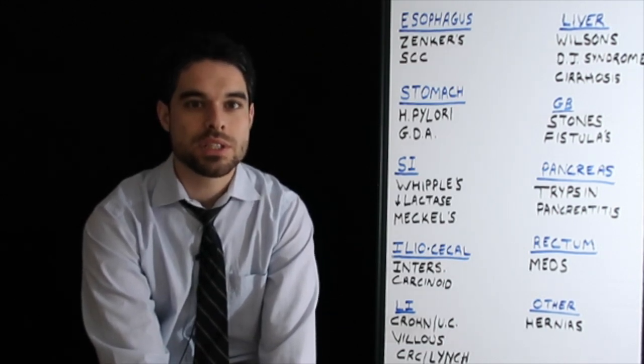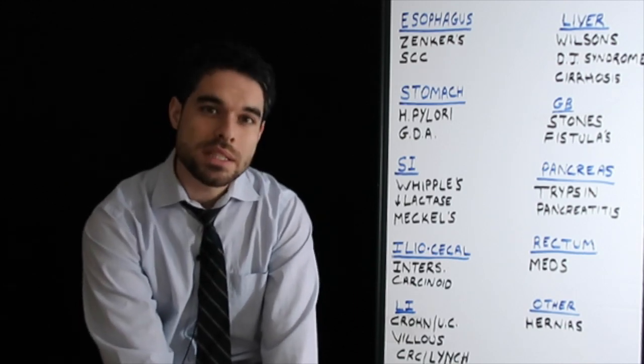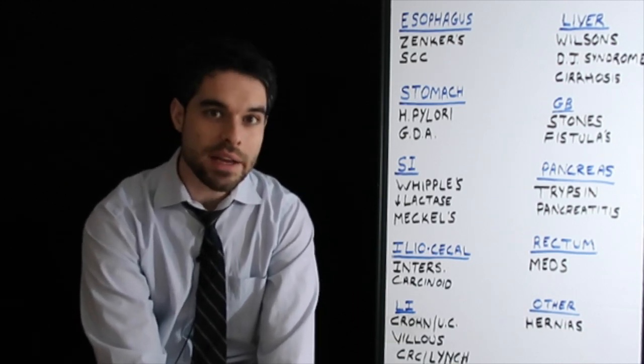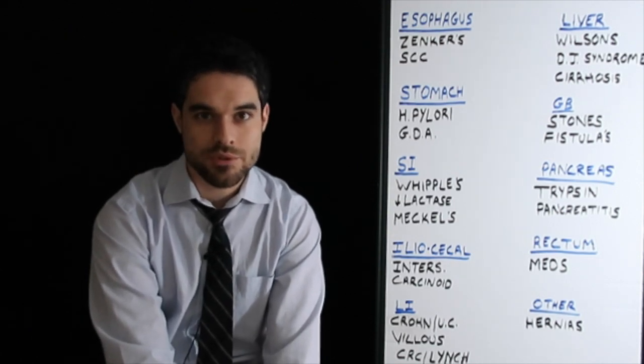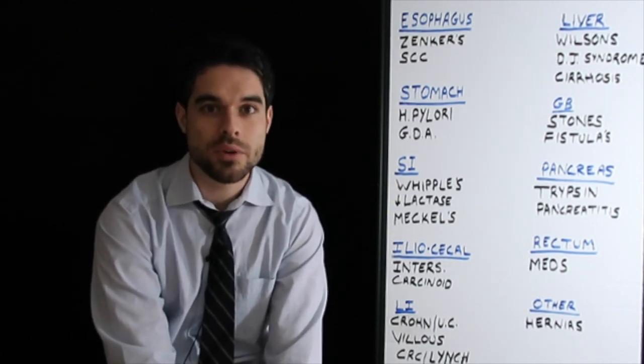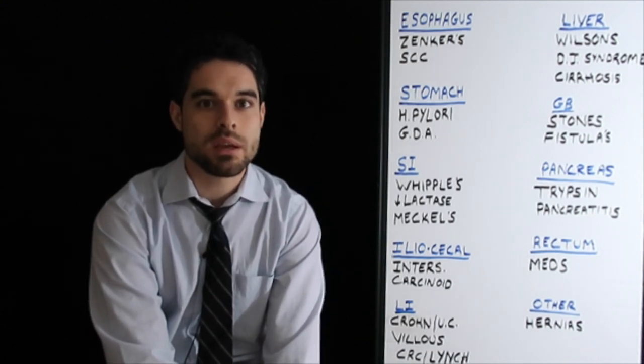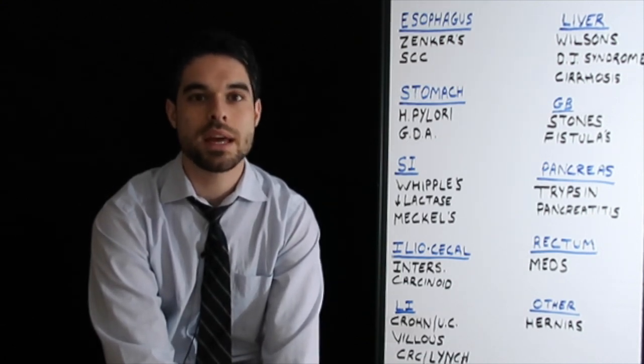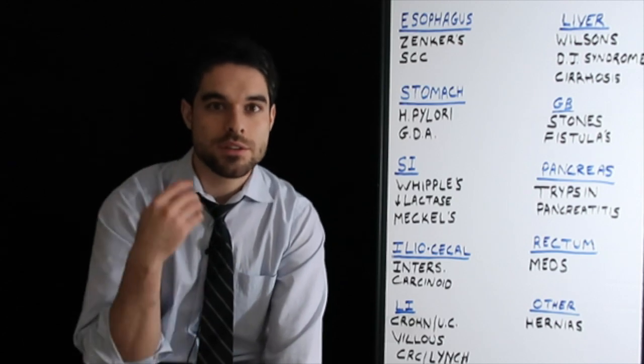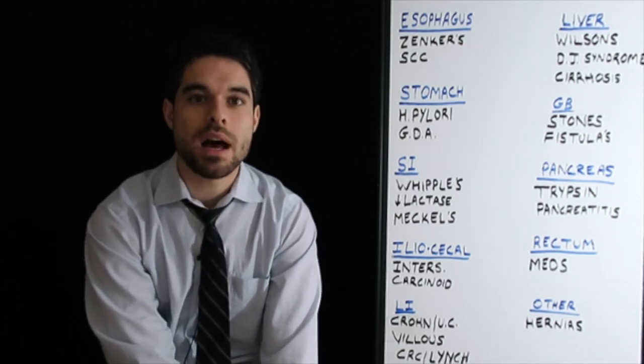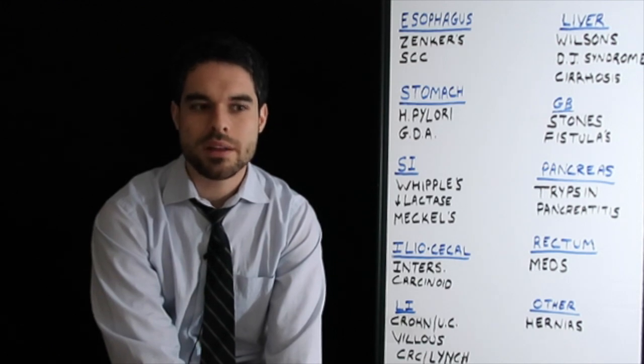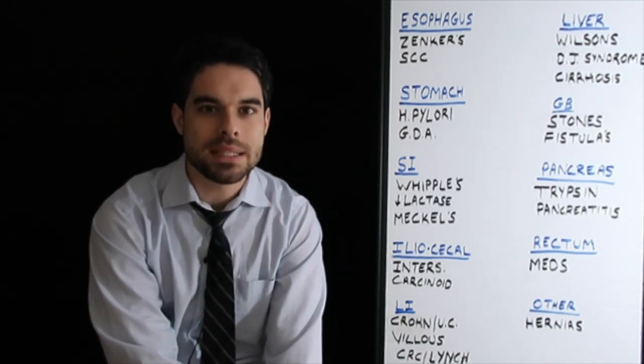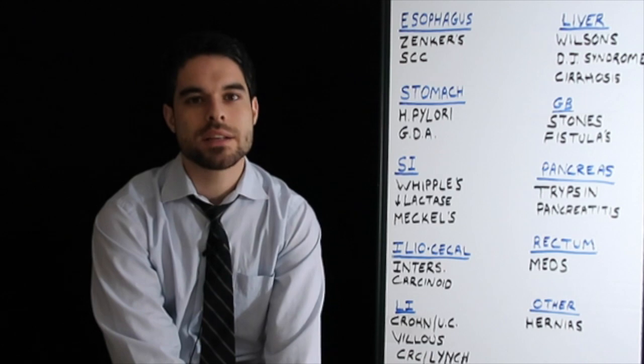In the liver, some pathologies that you can have over there, Wilson's disease, this is super high yield. Wilson's disease, just to review, is when copper is normally excreted in the bile, but you cannot do that. So it builds up in places like the basal ganglia, so you can have like Parkinson's-like effects. You can have Kayser-Fleischer rings around the eye, which can be, they may call it like a brown granular deposits around the cornea. That's Kayser-Fleischer rings.